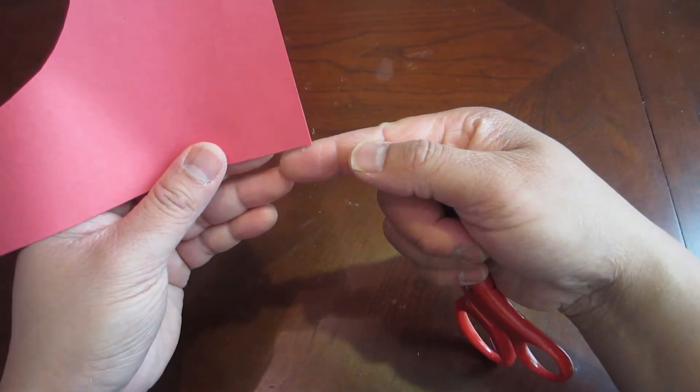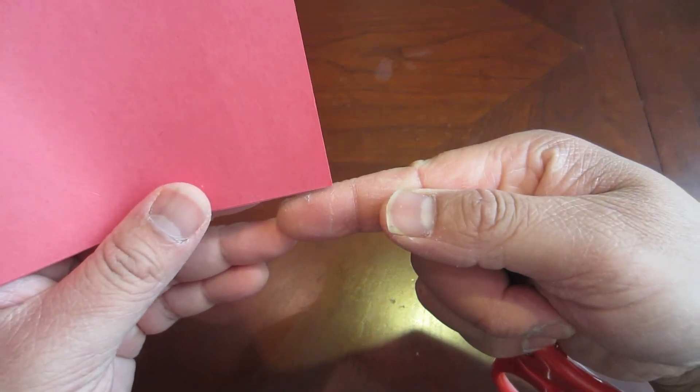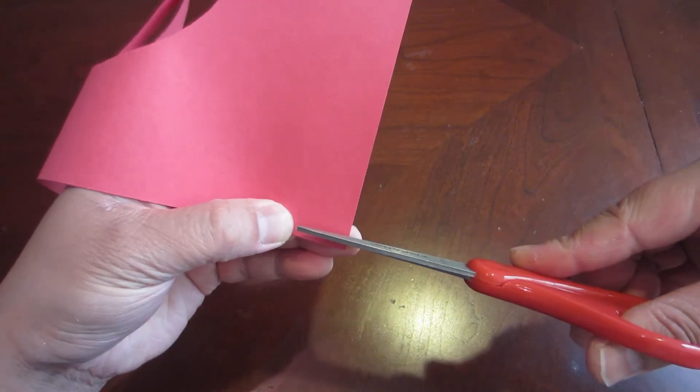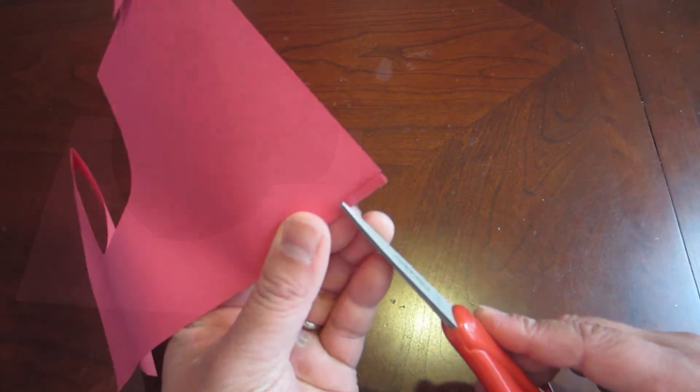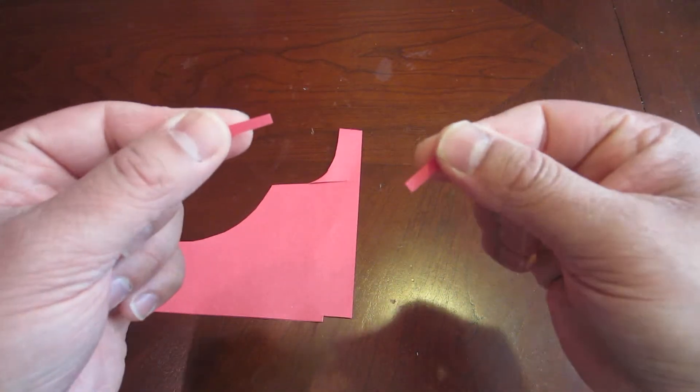Next, let's make the eyes. Cut out about 3 fourths of an inch for the eyes. Your eyes should look like this when you're done.